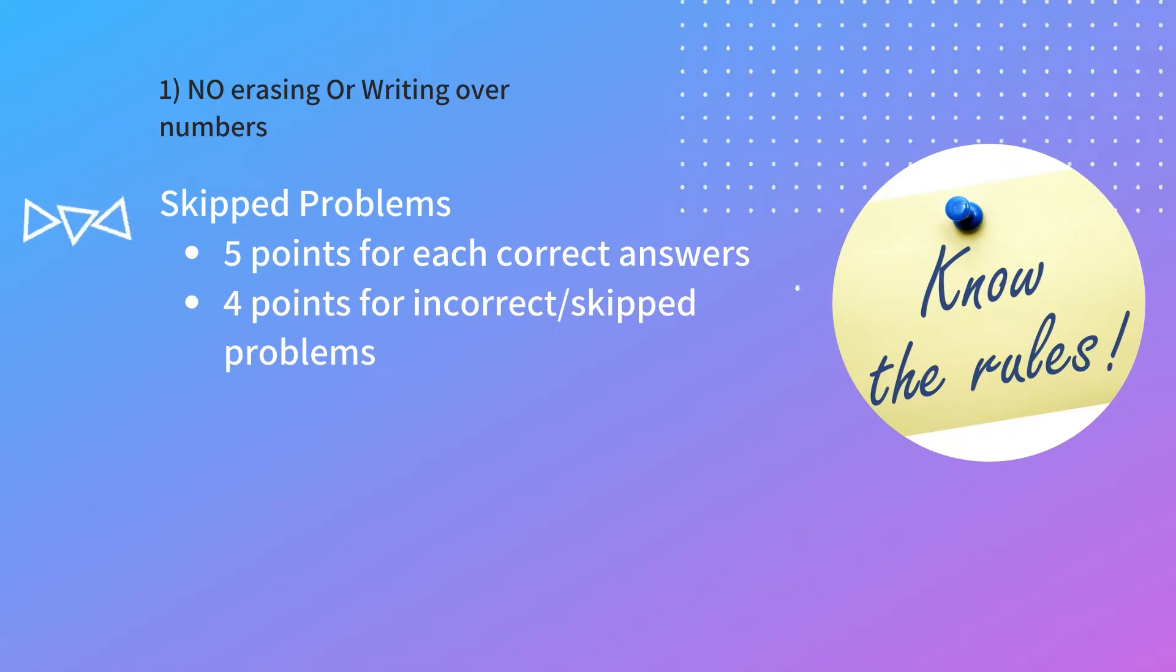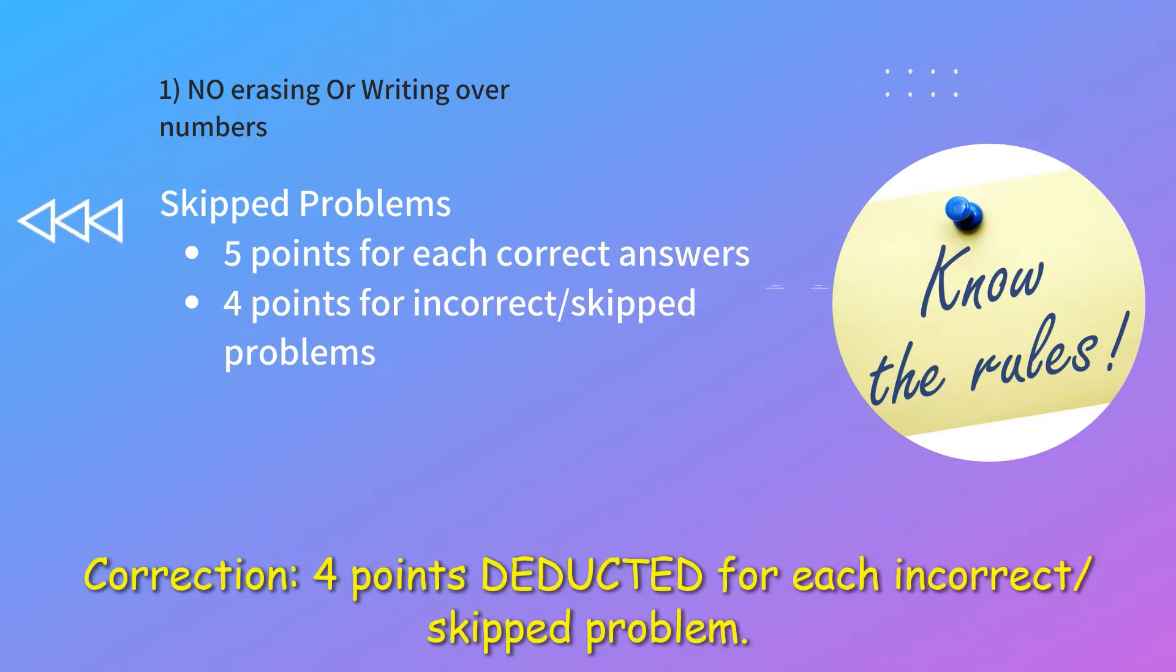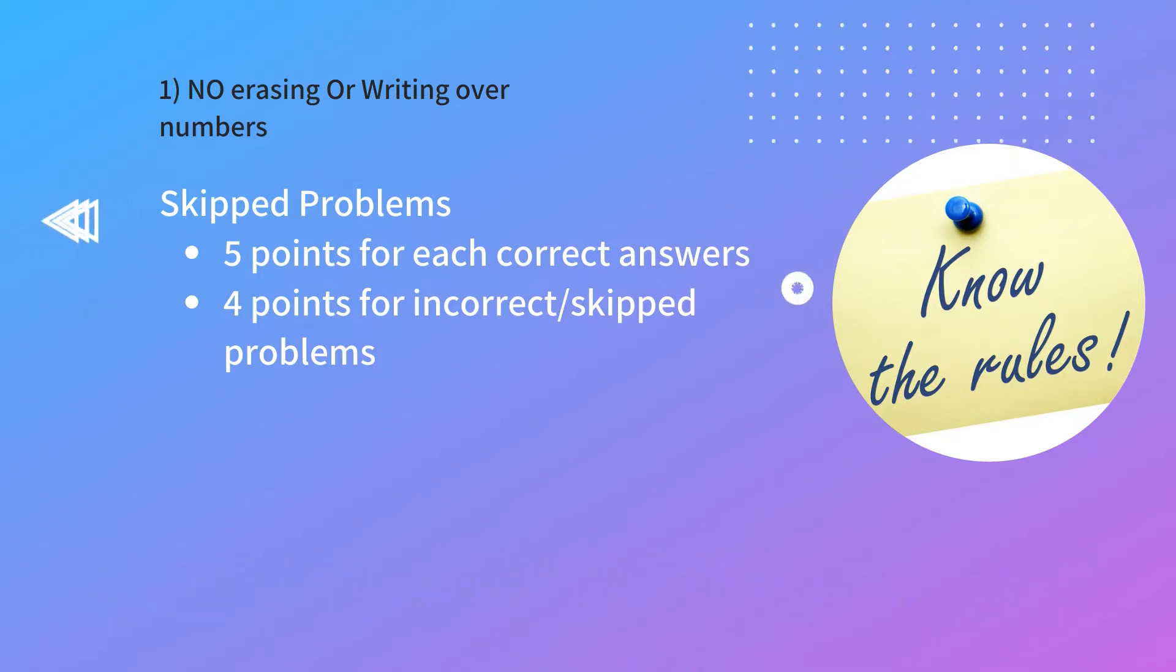Rule number two, skipped problems. The test has 80 questions. For every single question that you get correct, you will get five points for it. But for those questions that you don't get correct, you will get four points deducted. And if you skipped any questions, from the first one that you started to the last one that you attempted, you will also get deducted four points as if it was incorrect.